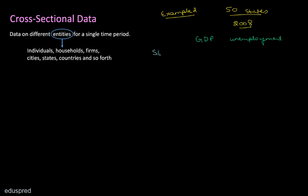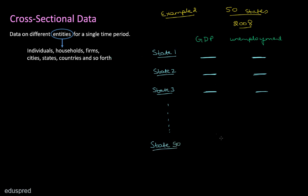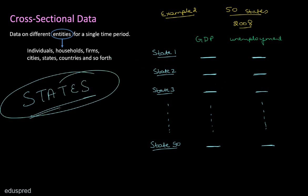For state number one, we will have some GDP value for 2008 and some unemployment value for 2008. Then we collect data from state two — GDP and unemployment for 2008. Similarly for state three, and so on until state 50, where we again have GDP and unemployment figures for 2008. In this example, we have data on different entities — states — for a single time period: the year 2008.